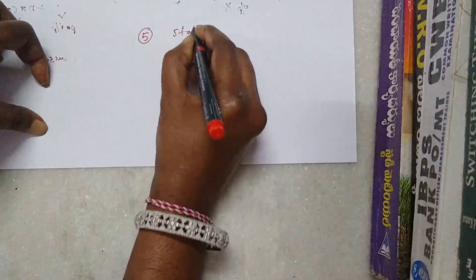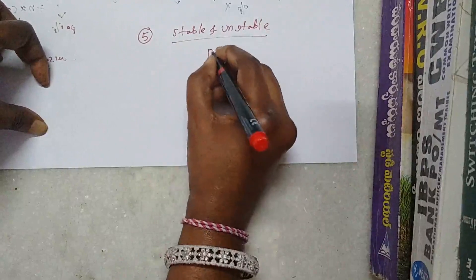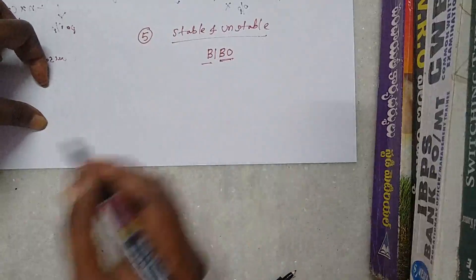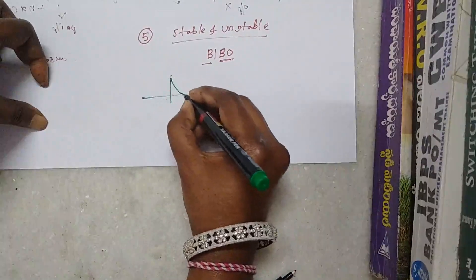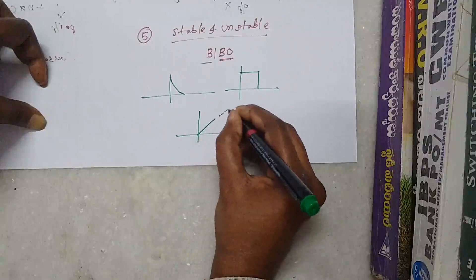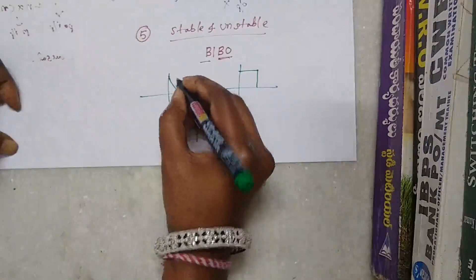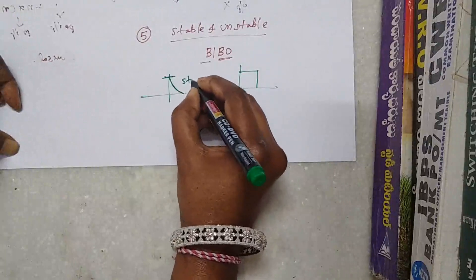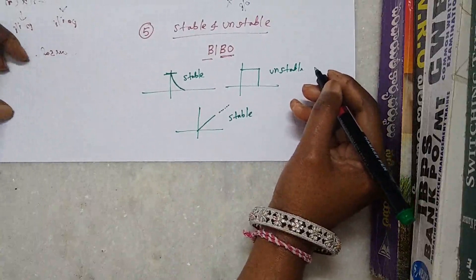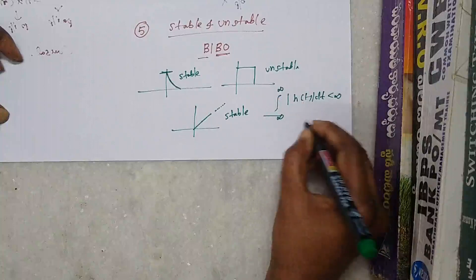The last classification is stable and unstable systems. Stable means the system must follow the bounded input, bounded output (BIBO) condition: if the input is bounded, the output must also be bounded, meaning the signal amplitude should be finite. In the ramp case, the signal amplitude is infinite, so it is not a stable system — it is unstable. Signals with finite amplitudes represent stable systems. The necessary and sufficient condition for stability is that the integral from minus infinity to infinity of |h(t)| dt must be less than infinity.